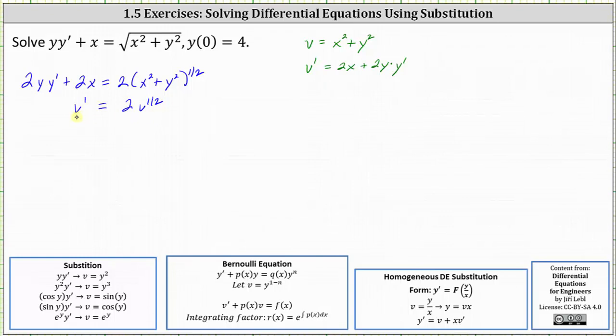Let's write v prime as dv/dx. Let's also multiply both sides by v to the power of negative one-half. This gives us v to the negative one-half dv/dx equals two.